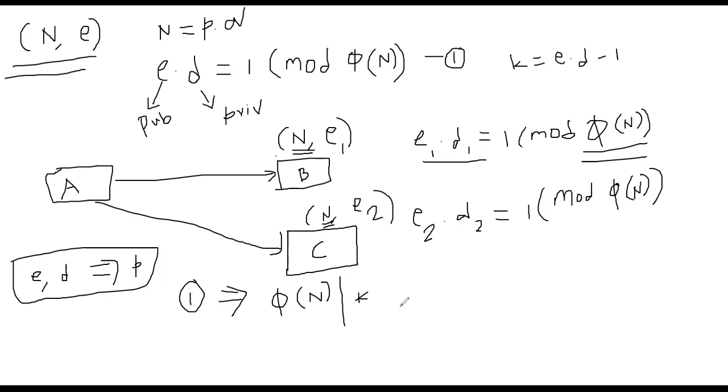Now, if φ of n divides k, we also proved a theorem earlier that if you take any group element x from Z star n, what can you say about x power k? x power k is also equal to one in mod n. That's something we already proved because k is a multiple of φ of n. That's the reason why we say φ of n divides k. That means x^k is equal to one in mod n. So this is going to help us now.